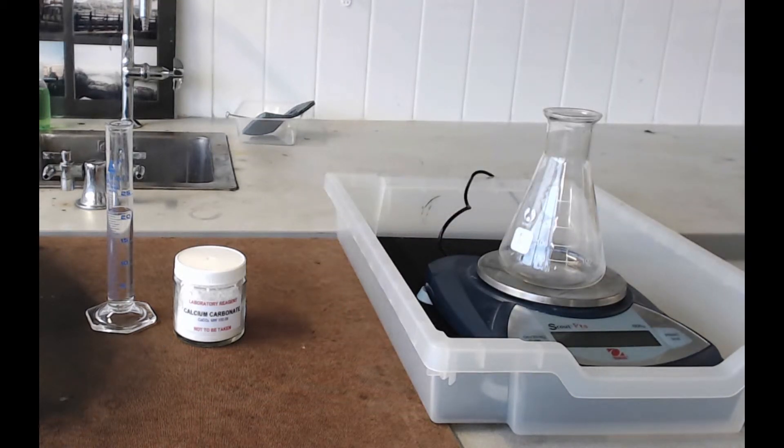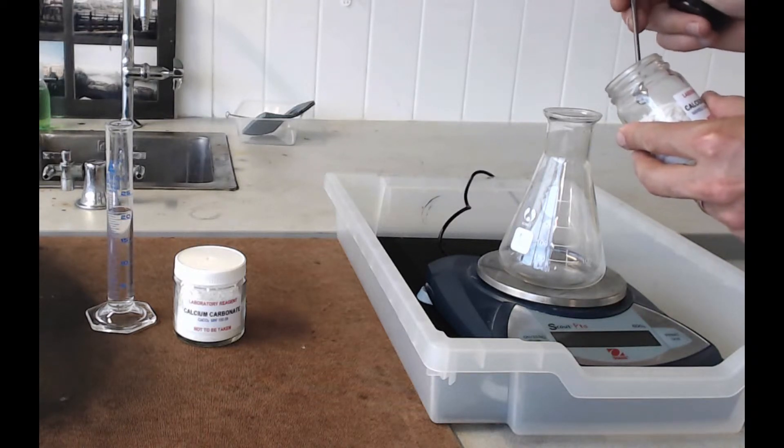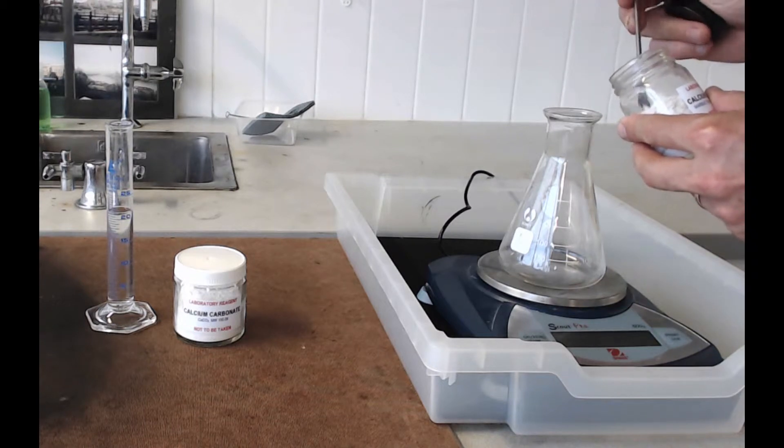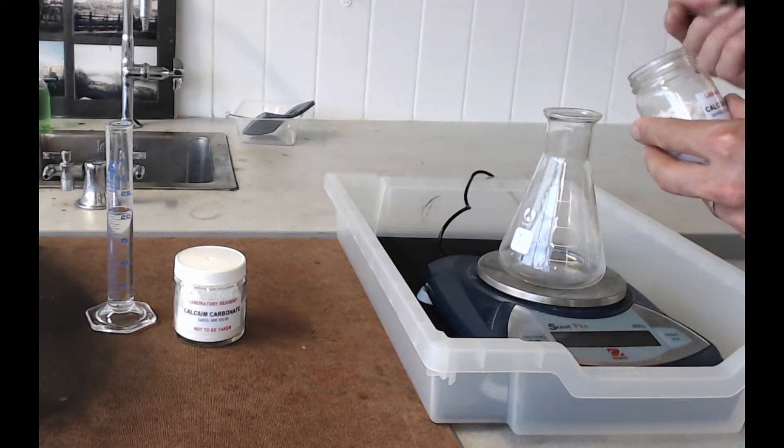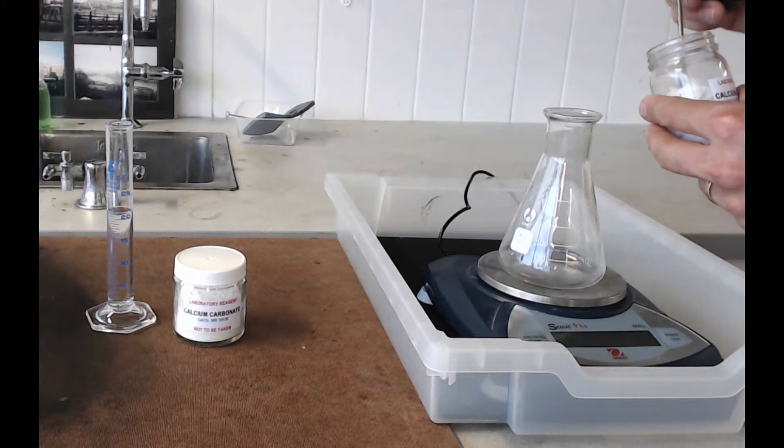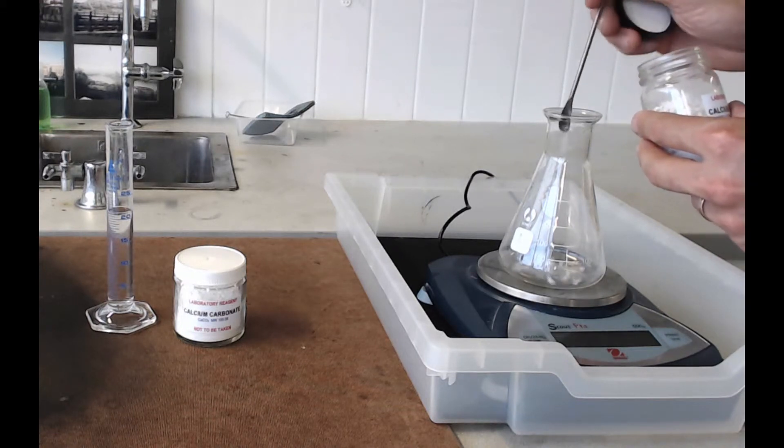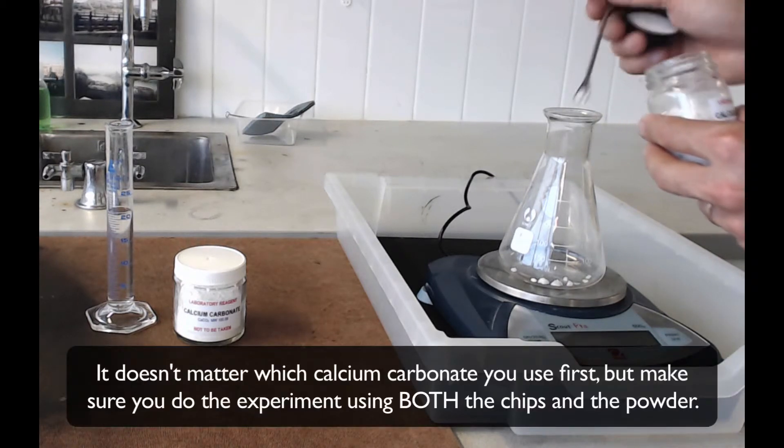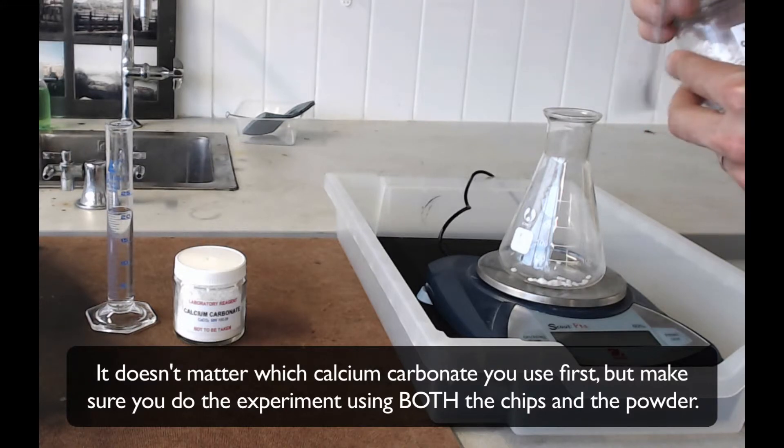As always, it's a good idea to try and keep things from spilling onto the balance so when you're weighing these things out just remember to try and keep your jar nice and close to the mouth of your flask because that way it's much harder to have a spill. So put 2g or as close as you can to 2g into your conical flask.